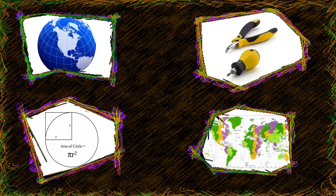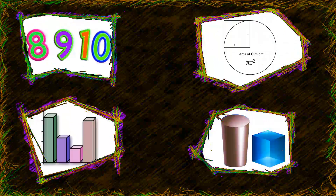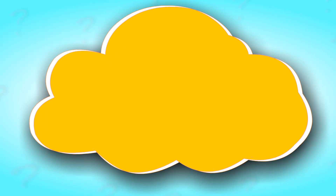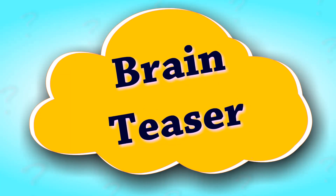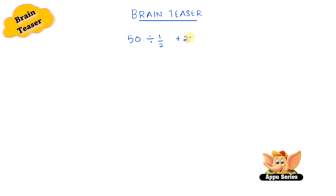We will regenerate your brain cells and activate your energy to answer any and every question we ask you. So let's begin. What do you get if you divide 50 by half and add 25? The answer is not 50. Let me show you how to do this.